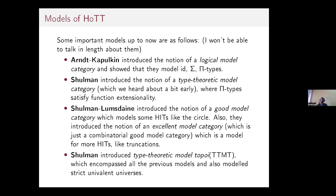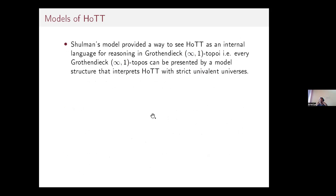In 2019, Shulman introduced the type-theoretic model topos, which we'll call TTMT. That encompassed all previous models and also models a strict univalent universe. This was a revolutionary step towards understanding the semantics of HoTT, because Shulman's model provided a way to see HoTT as an internal language for reasoning in Grothendieck infinity-one toposes.